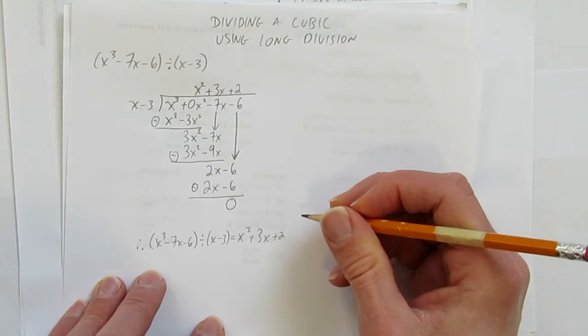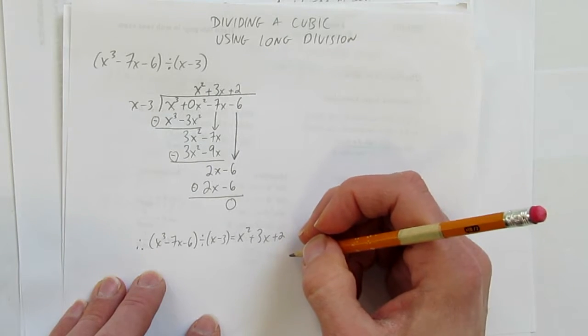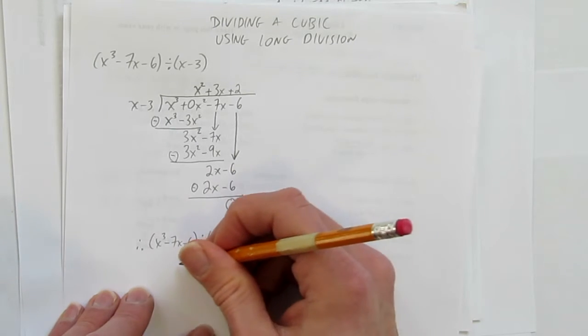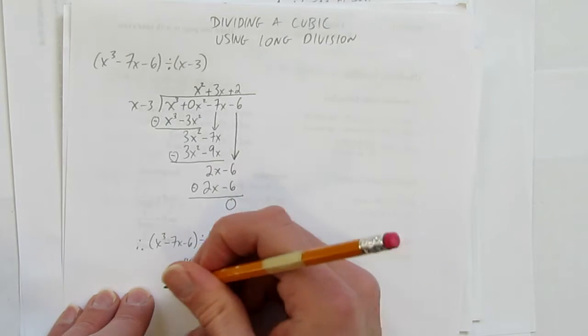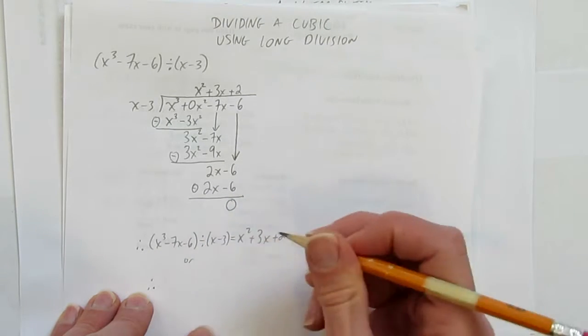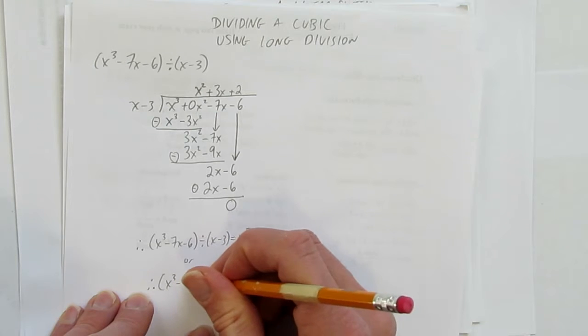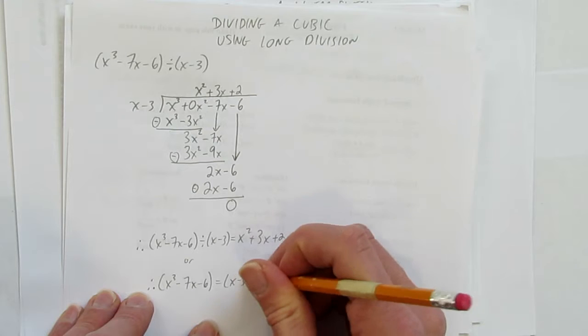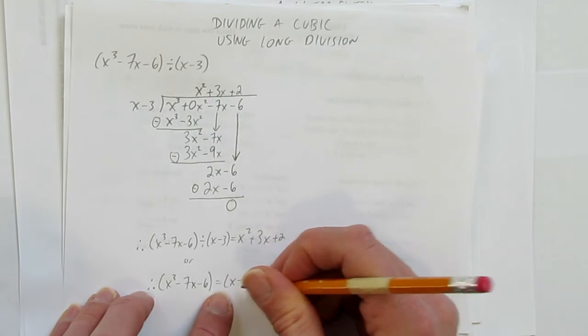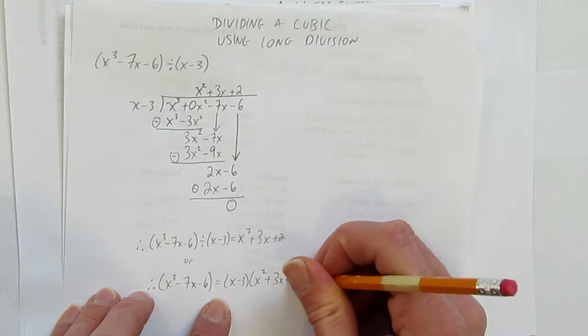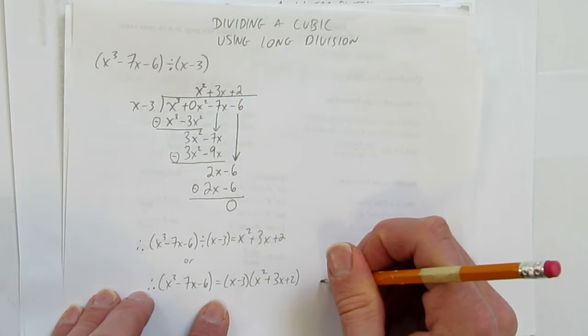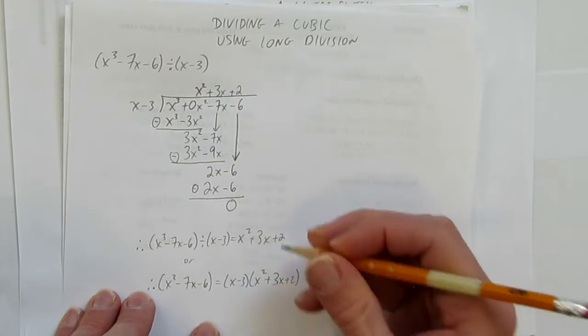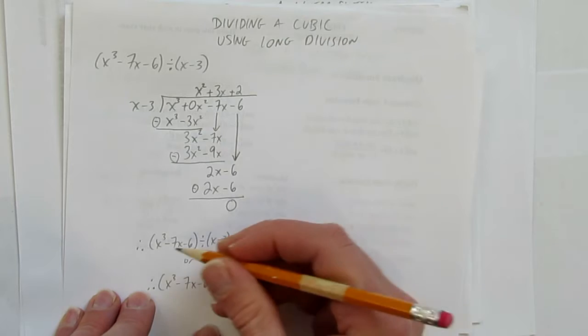If we'd gotten a remainder, we would have had to reword it differently. You could write your answer alternatively: x³ - 7x - 6 = (x - 3) times (the quotient) plus the remainder. You couldn't just tack on the remainder to the quotient, as that would be incorrect.